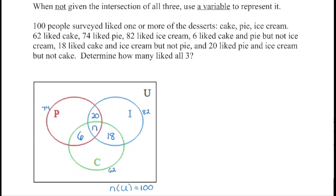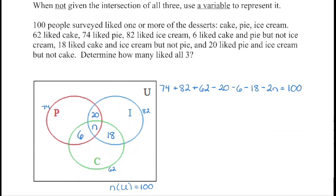We don't have enough information to fill out how many people like pie only, ice cream only, or cake only, because of this variable n. So we have to go about it a different way. Because each element within the universal set can only be counted once and altogether there are 100 elements, if I add up all people in the pie category plus ice cream plus cake, that's going to come to way over 100 — for example, these 20 people were counted twice: once for pie and once for ice cream. I only want to count them once, so I remove one group of that 20.